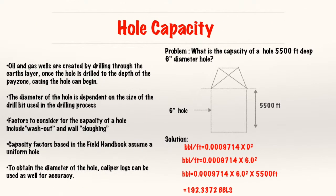So now let's discuss hole capacity. So basically, oil and gas wells are created by drilling through the earth layer of the earth's surface. And once that hole is drilled to the depth of the pay zone, you can case the hole. So casing can begin putting your surface casing, your intermediate casing, your production casing, all that can go forward. So the diameter of the hole is dependent on the size of the drill bit used in that process. And the factors you have to consider is washout. Maybe I have an obstruction in my well while I'm drilling or when I'm trying to case or I have a deep hole that actually creates a gap in my hole and wall slurring. So these factors, the factors in the field data book assume a uniform hole. So most, sometimes you can decide to use a caliper, caliper equipment to get the caliper logs for accuracy.